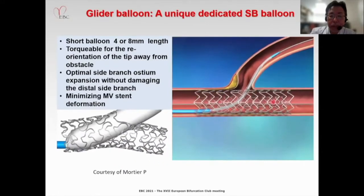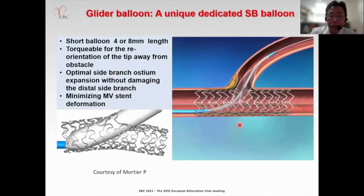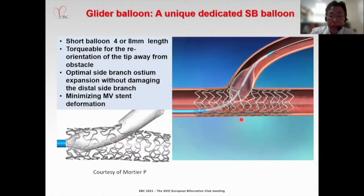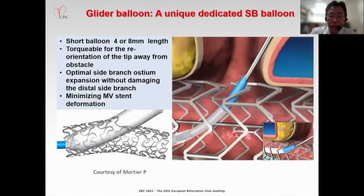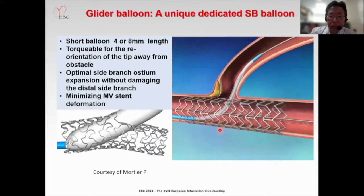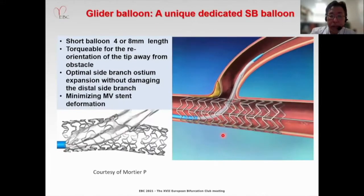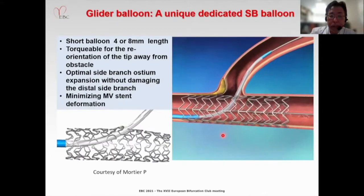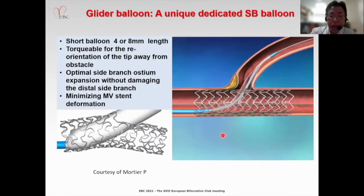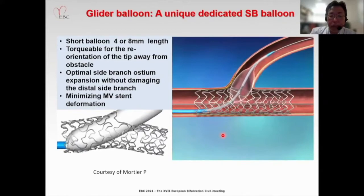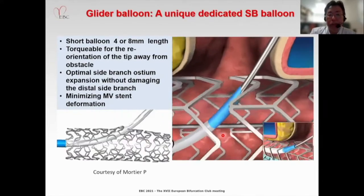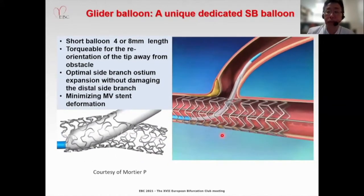This balloon has a true curve for reorientation of the tip of the wire from the obstacle, provides optimal side branch ostium expansion without damaging the side branch, and minimizes member stent deformation.